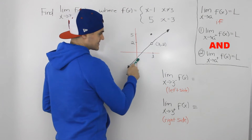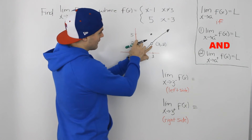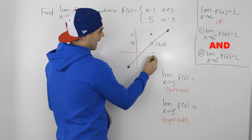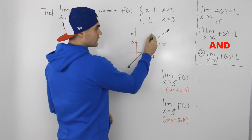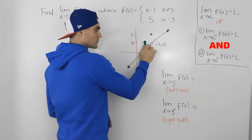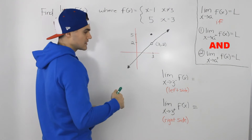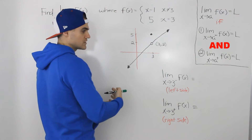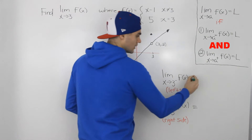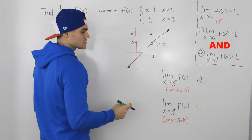So as x is approaching 3, the y value is approaching 2. At an x value of 3, the function is defined by 5, but as we approach 3, it's not approaching 5 — it's approaching this y value of 2. And because limits only deal with the value that the function is approaching, we say that this limit is going to equal 2.